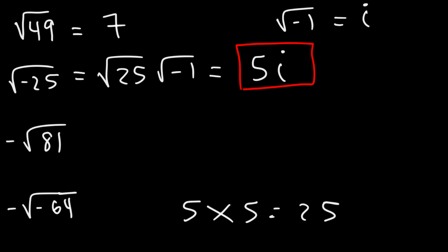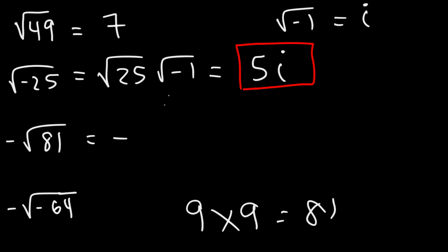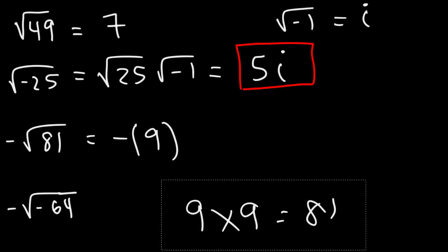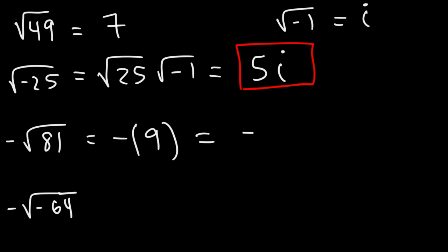Now what about negative square root of 81? This time it's a little different — the negative is on the outside. So we're not going to get an imaginary number; we're going to get a real number. That negative sign will remain on the outside. The square root of 81: what number times itself equals 81? 9 times 9 is 81, so the square root of 81 is 9, and the final answer is negative 9.